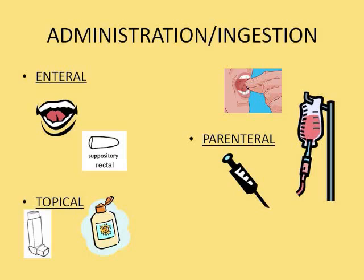The third route of administration is parenterally — we've got the shots: IM, sub-Q, and IV medication. But we've also got sublingual and buccal medication. Even though they go in the mouth, they don't go to the GI system. They are absorbed directly into the vascular beds under the tongue and in the cheek, so they don't have the first pass effect, which has to do with going to the stomach to be broken down.